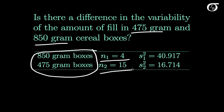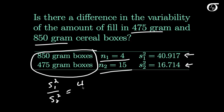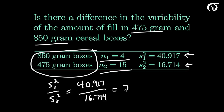I took away the box, took away the bag, measured the amount of cereal in there by weight, and then calculated the sample variance. And if we just took the ratio of sample variances — s1 squared over s2 squared — this would be 40.917 over 16.714, and this works out to 2.448 to three decimal places.